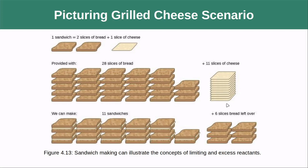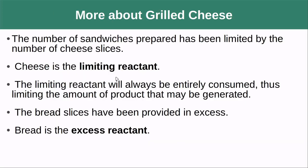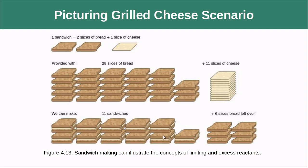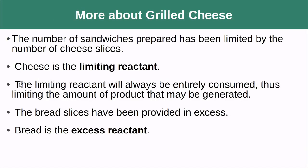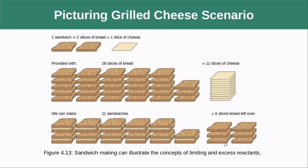This means that the cheese — I would need more cheese in order to make more sandwiches. Cheese is therefore my limiting reactant. The amount of cheese I had decided how many sandwiches I could ultimately make. The limiting reagent is always going to be completely consumed — I didn't have any cheese left after I made my sandwiches. The bread was provided in excess and it is therefore called an excess reactant, and I will have bread left over.